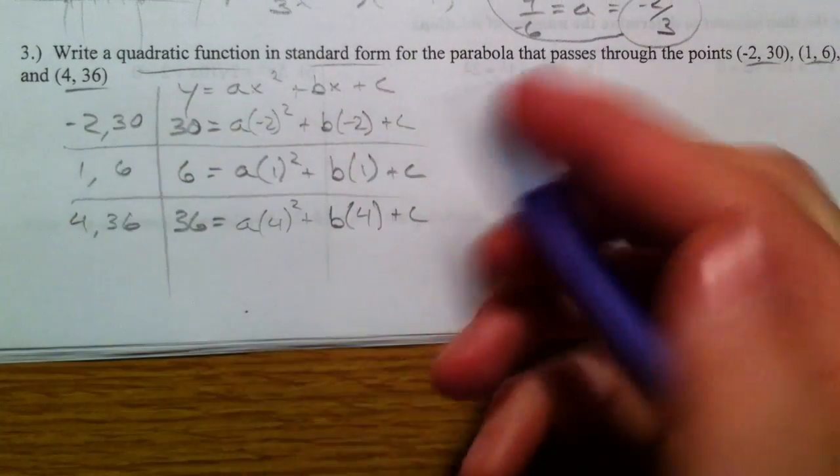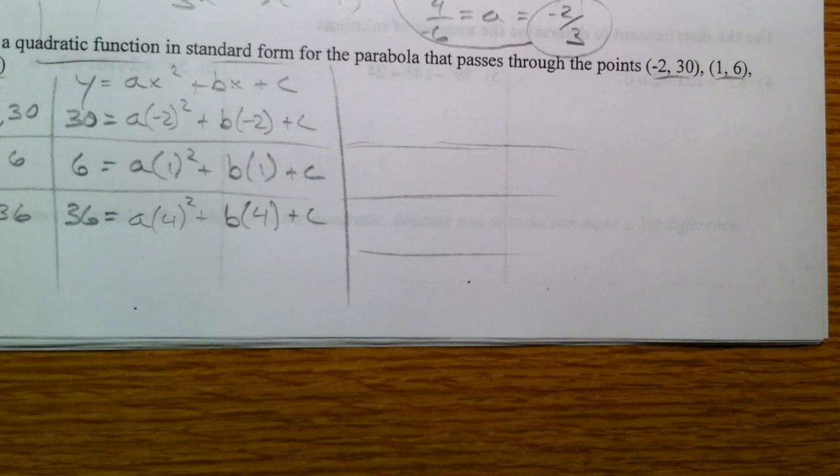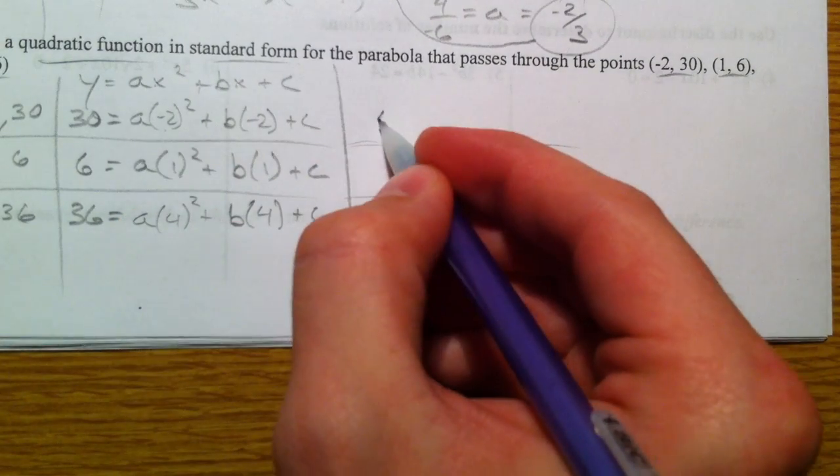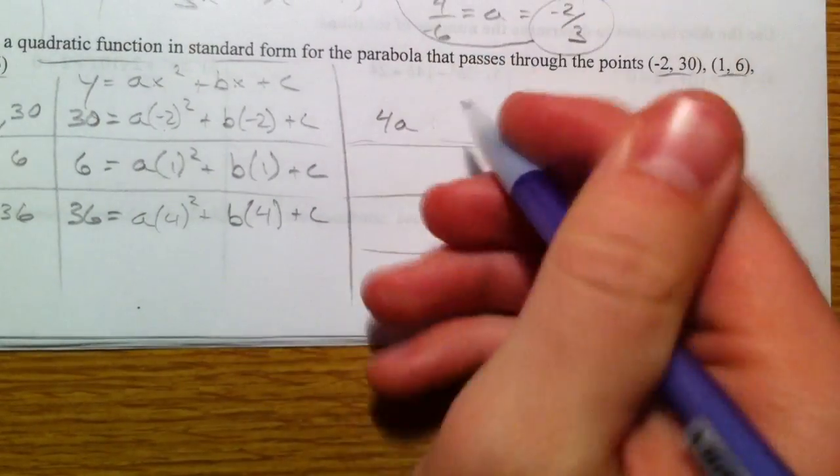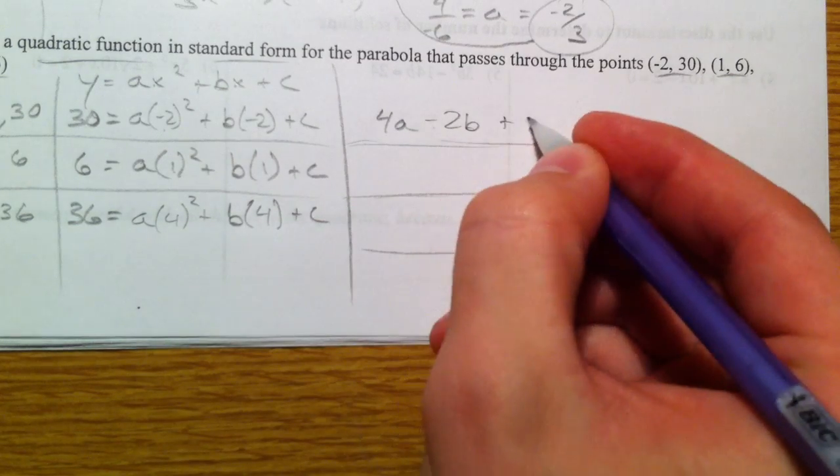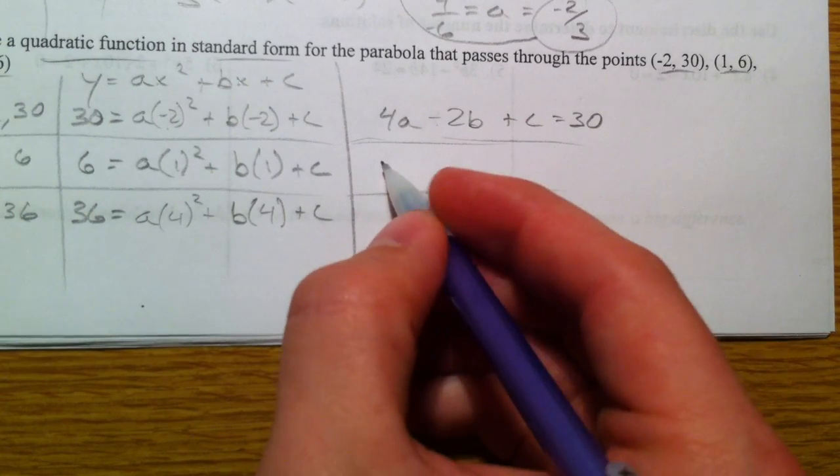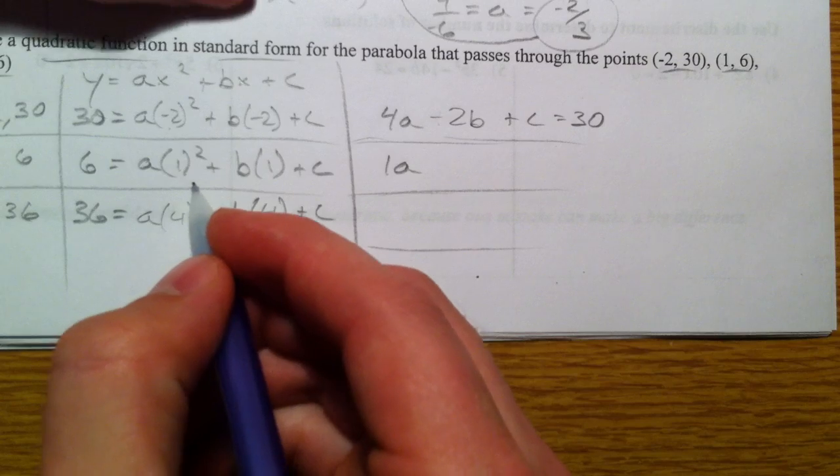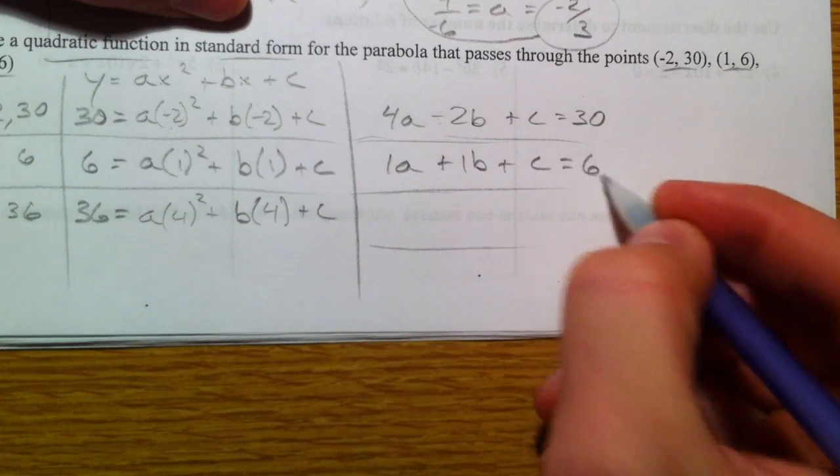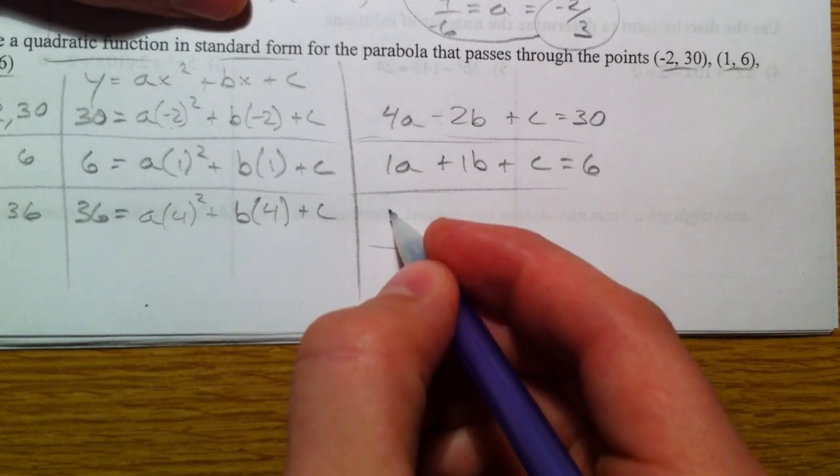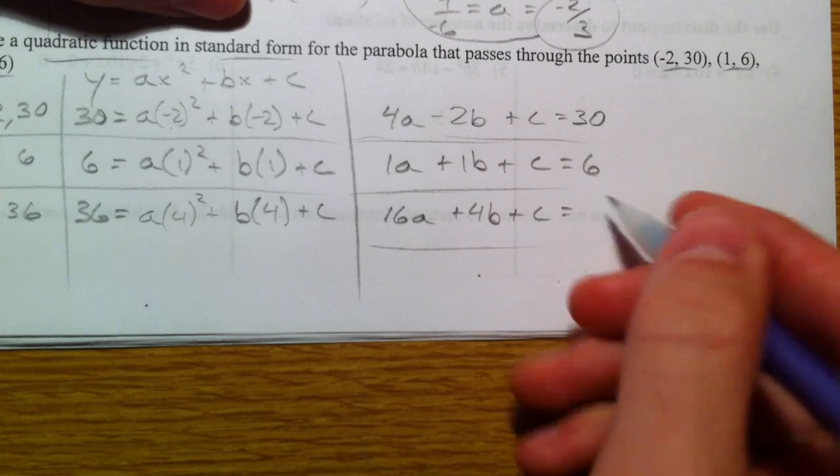And 36 equals a times 4 squared plus b times 4 plus c. So what we have are an a, b, and a c. And so what I'm actually going to do is I'm going to flip-flop this around so that we have a system of three equations. So I'm going to write negative 2 squared is 4a plus, and I'm going to write minus 2b plus c equals 30. I'm writing equals 30 because this is how we're used to seeing it. So 1a plus 1b plus c, and you don't need to include the 1s, but I did.